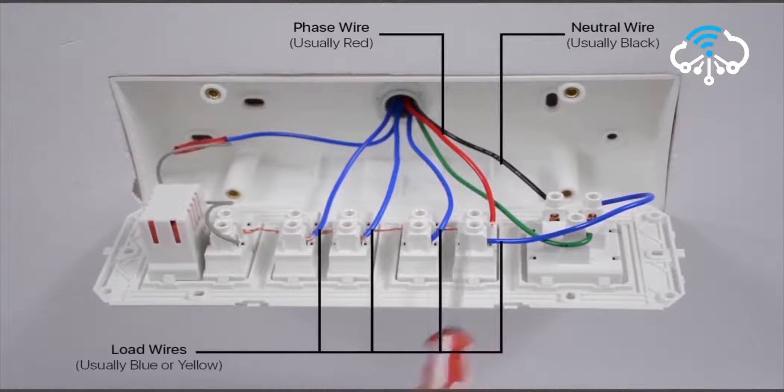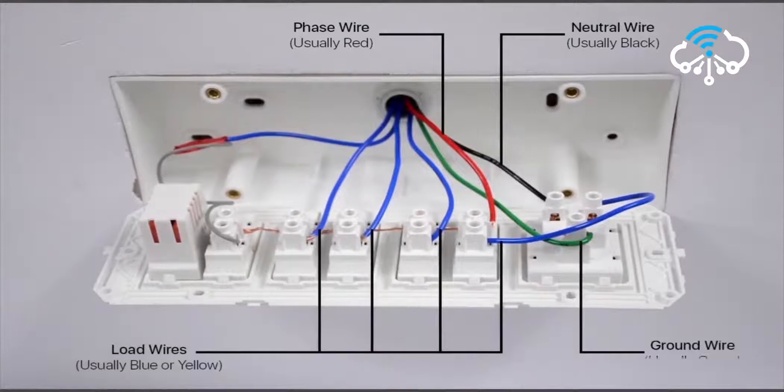Green wire is the ground wire and is usually connected to a socket. Although unavailability of ground wire will not impact the installation process. Now let's get to Step 4: Connecting the device.